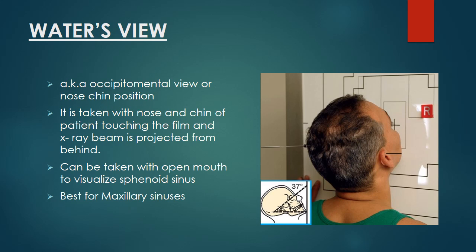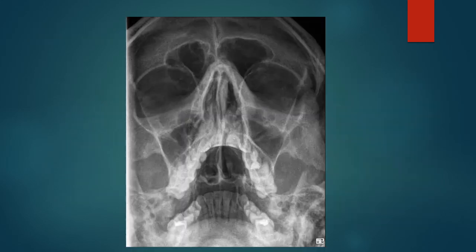It is best for visualizing maxillary sinuses. Here is an example of Waters view showing the nasal septum, orbits, upper jaw, and lower jaw. This is the left maxillary sinus and this is the right maxillary sinus. These are frontal sinuses, and the sphenoid sinus can be visualized through the open mouth.